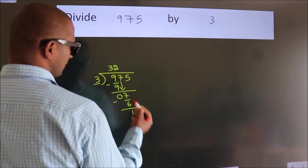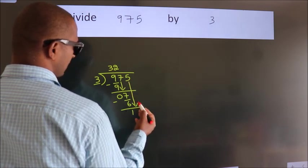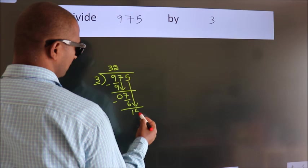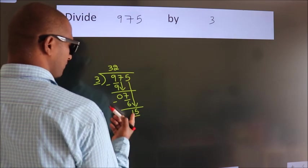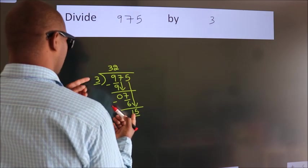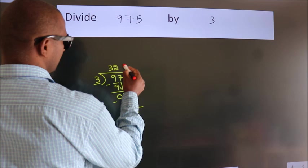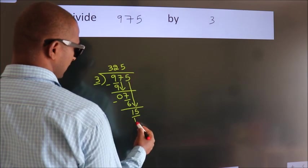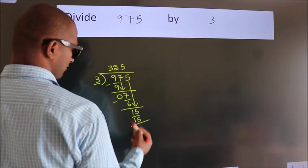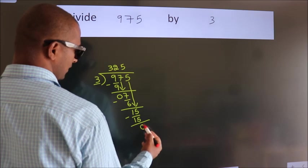After this, bring down the beside number. So 5 down. So 15. When do we get 15? In 3 table, 3 5's 15. Now we subtract. We get 0.